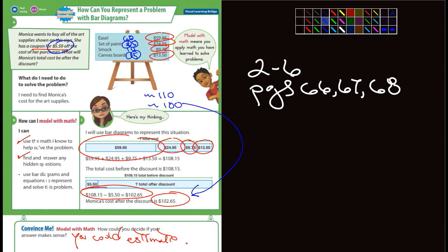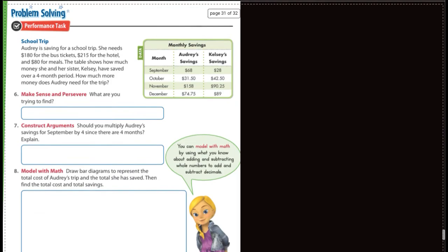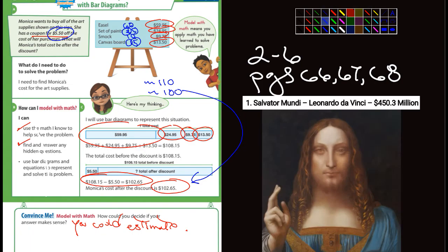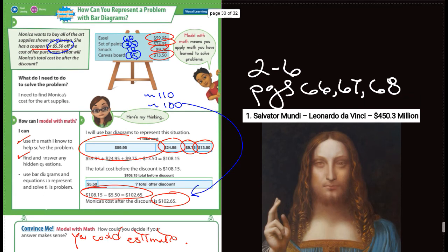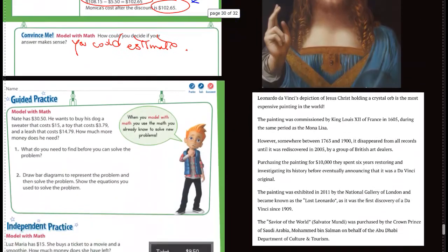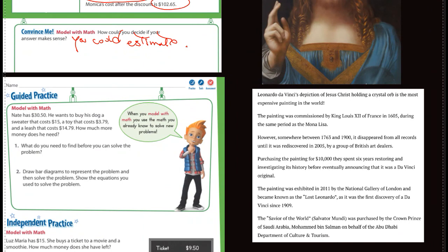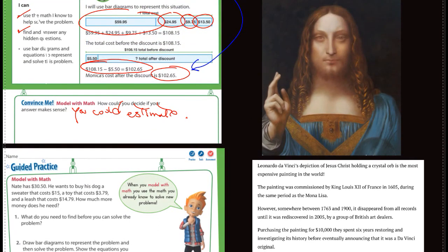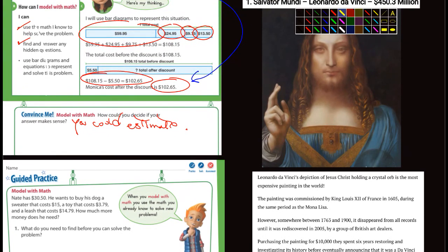I was curious — they were talking about paintings, and I wanted to see what the most expensive painting was that was ever sold. So it was by Leonardo da Vinci, and it sold for $450 million. That's almost $500 million, which is a half a billion. Leonardo da Vinci's depiction of Jesus Christ holding a crystal orb is the most expensive painting in the world, and you can see he is holding some kind of crystal orb there.